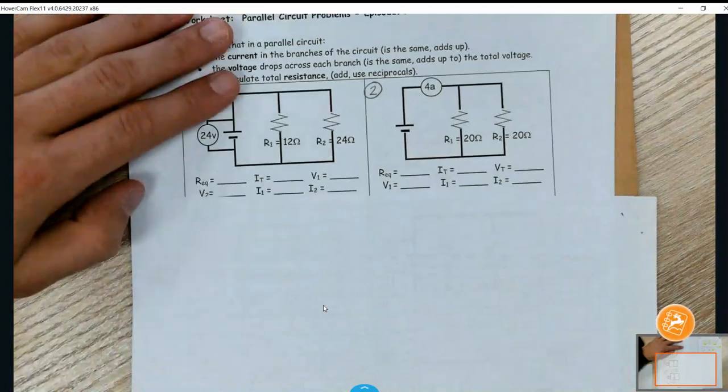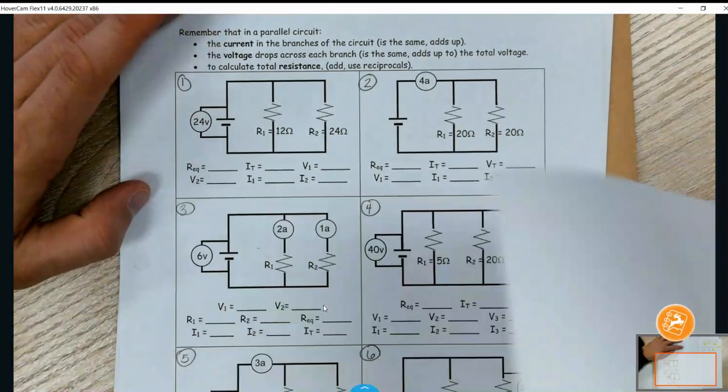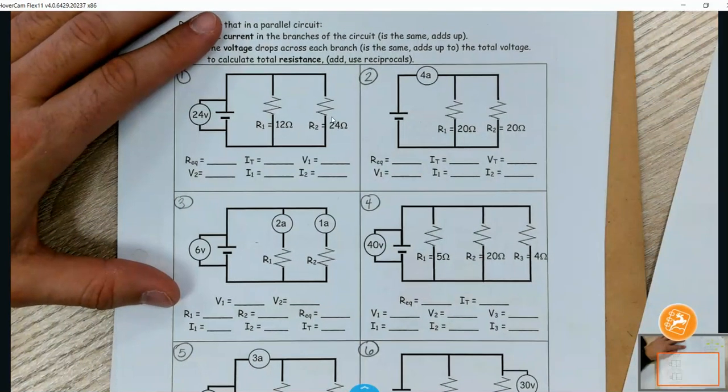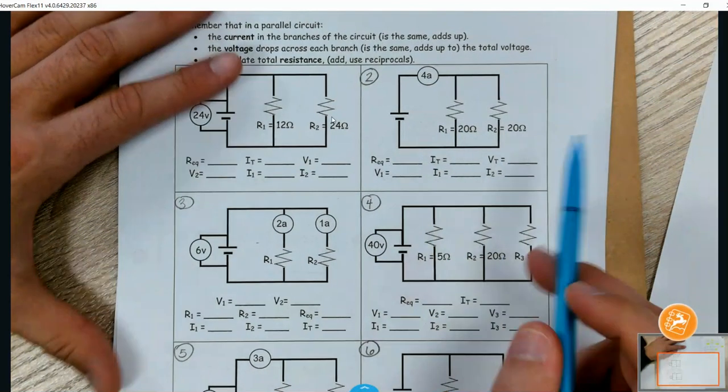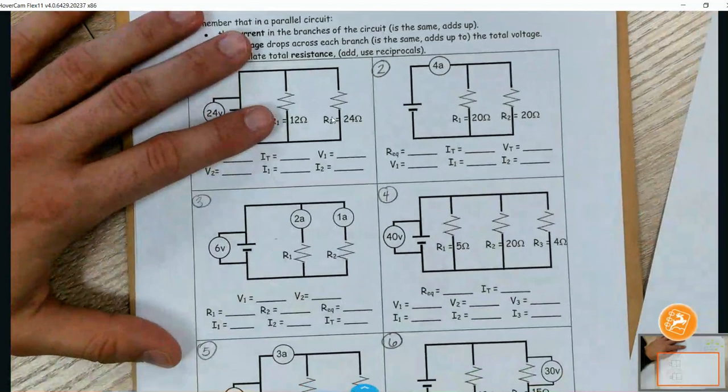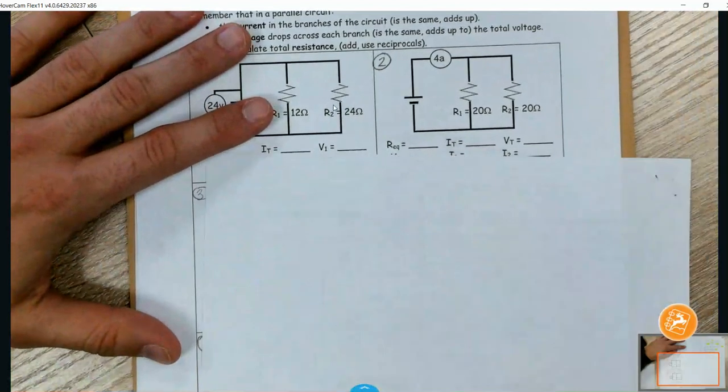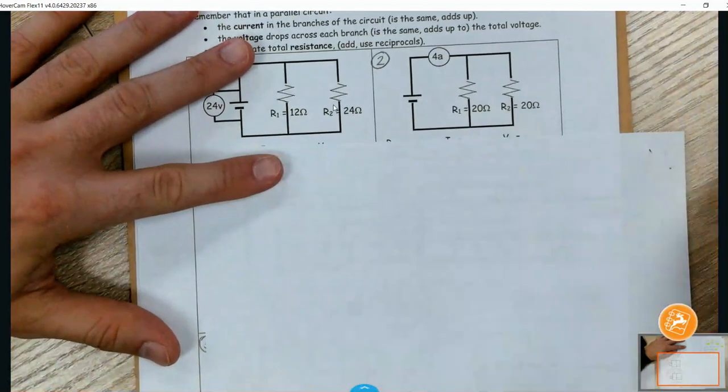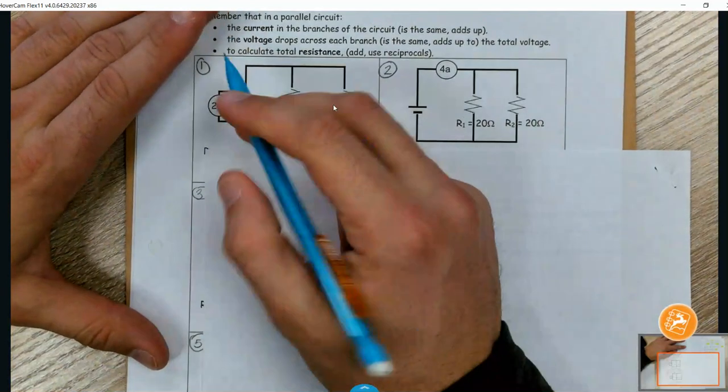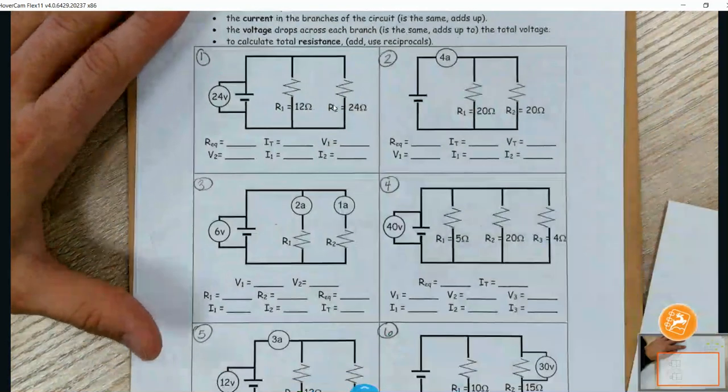Alright, so we're going to go through number two here on our assignment. Now it does have all these pieces of information that it's asking for, but again guys, I want you to just make a table that goes along with this. If this is going to be number one, you guys can label these right now real quick.